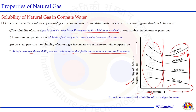The solubility of natural gas in connate water is a function of temperature and pressure, and is less compared to solubility in crude oil. At constant temperature, solubility of natural gas in connate water increases with pressure. At constant pressure in a low-pressure region, solubility decreases with temperature, but at high pressure and high temperature, the solubility increases. This is important for complete material balance calculations — accounting for how much gas is free, how much is dissolved in oil, and how much is dissolved in connate water.